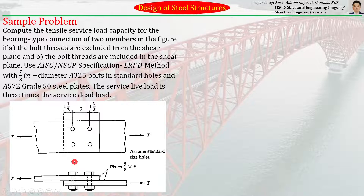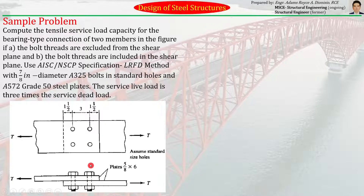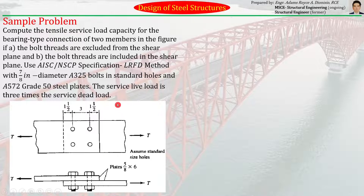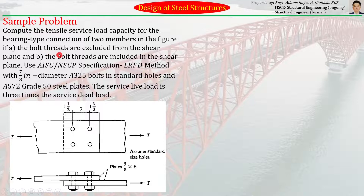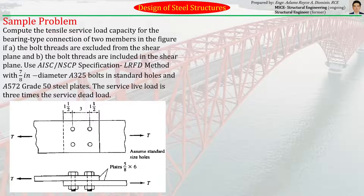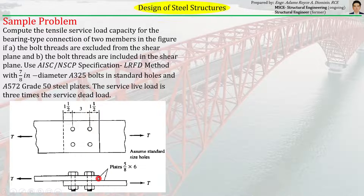We have a bearing type connection, meaning we don't need to pre-tension the bolts. The strength of this member will mainly depend on the bearing and shear capacity of the connected member as well as the bolt. We have two cases: first, where the bolt threads are excluded from the shear plane (not at the interface of the two connected parts), and second, where the bolt threads are included in the shear plane.